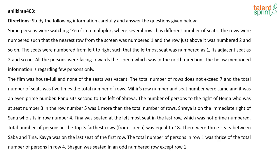What is given? There are some people watching a movie in a multiplex where several rows have different numbers of seats. The rows were numbered such that the nearest row from the screen was numbered 1, the row just above it was numbered 2, and so on. You have to find out who is sitting in which row, based on the given information.